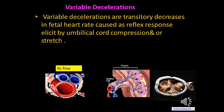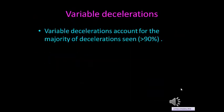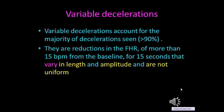Variable decelerations are transitory decreases in fetal heart rate caused as a reflex response elicited by umbilical cord compression or stretch. 50% of all monitored babies experience variable decelerations during labor. Variable decelerations account for the majority of decelerations — more than 90% — and are reductions in fetal heart rate of more than 15 beats per minute from baseline for 15 seconds, varying in length and amplitude and not uniform. So: 5% are early decelerations from head compression, 5% are late decelerations from placental insufficiency, and 90% are variable decelerations from cord compression.